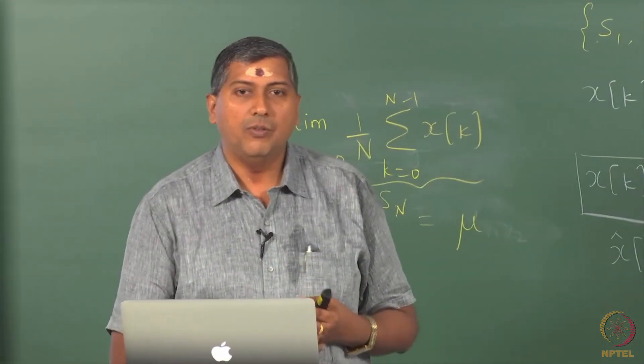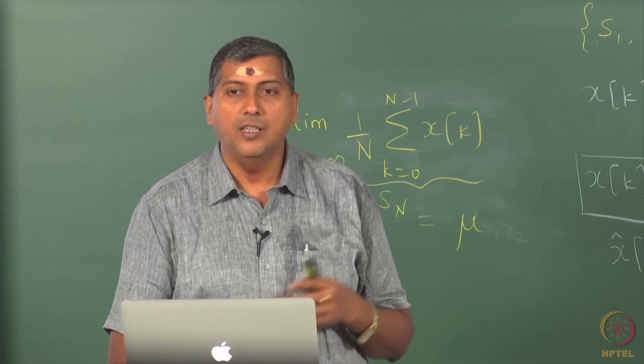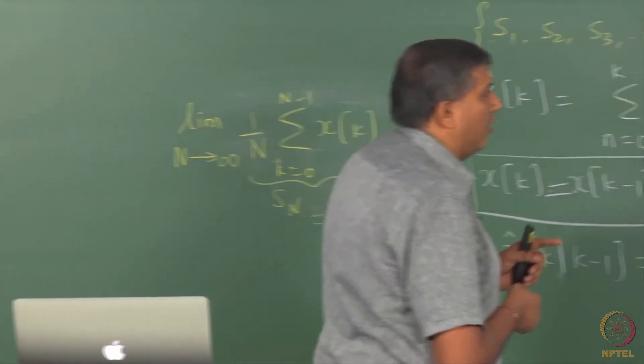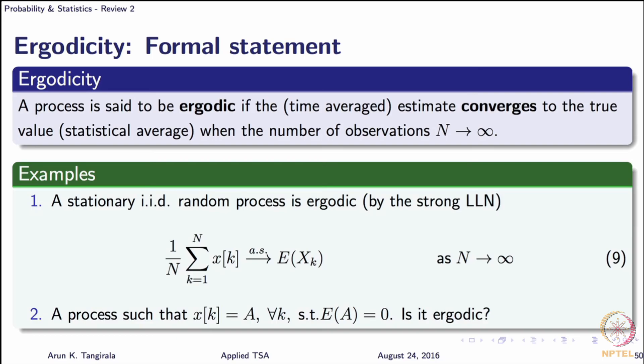Getting back to the discussion on ergodicity, you can show that this process is ergodic in mean. Now, there is another process that we can look at and ask if it is ergodic. This process is a peculiar one. As you can see on the screen, this process actually holds on to a constant value. How can a constant signal be random?